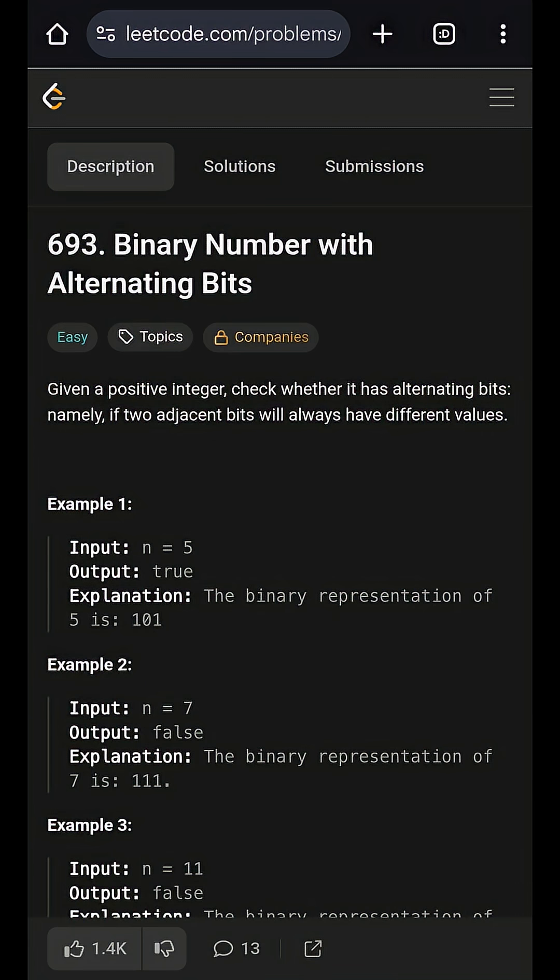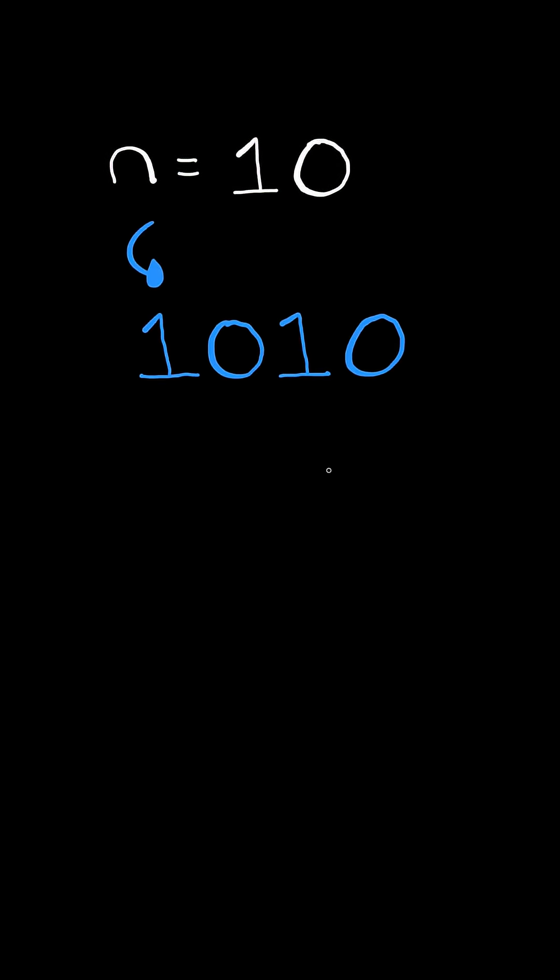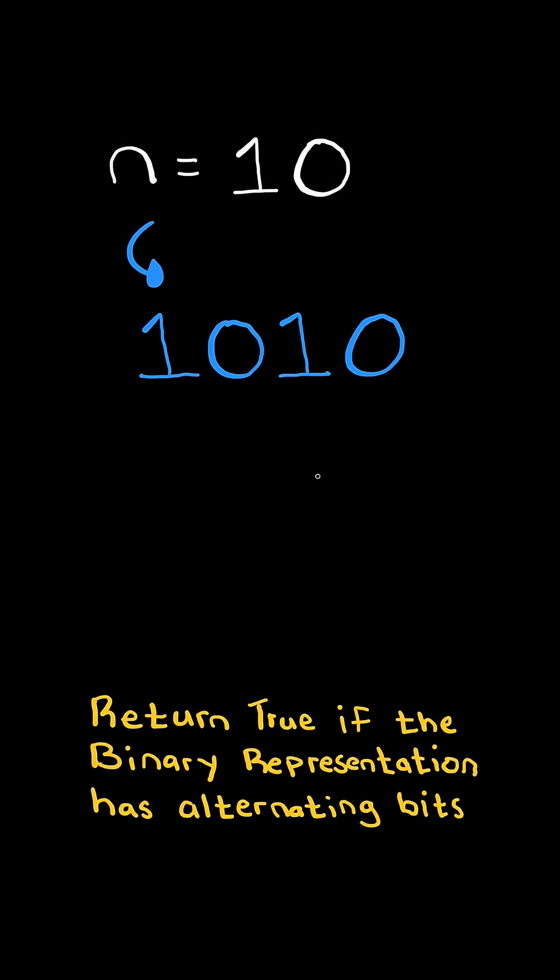Binary number with alternating bits. Given an integer n, consider its binary representation. Return true if the binary representation has alternating bits. In this case, all the bits alternate, so we return true.